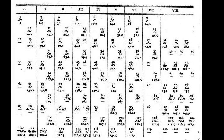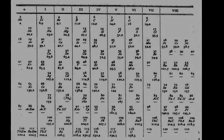The table is divided into four roughly rectangular areas called blocks. The rows of the table are called periods, and the columns are called groups.